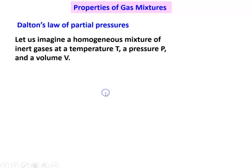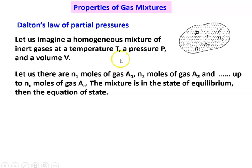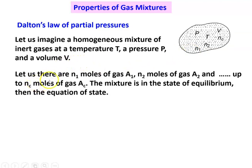We take a gas mixture. Let us imagine a homogeneous gas mixture of inert gases at temperature T, pressure P, and volume V. Ideal gases are inert gases — they should not chemically react. There are N1 moles of gas A1, N2 moles of gas A2, and up to Nc moles of gas Ac.